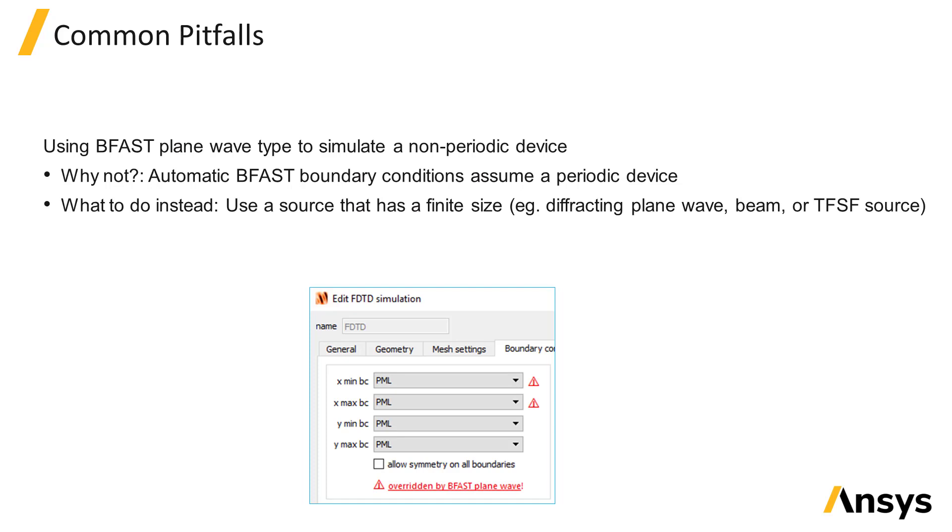Finally, you can't use the BFAST plane wave to simulate non-periodic devices. The reason for this is because the BFAST boundaries assume a periodic structure. So the results that you get from the simulation would be as though the source is infinitely wide, and the structure is periodic with the period being equal to the span of the simulation region. Again, you can use a finite sized source like the Gaussian beam or total field scattered field source instead.